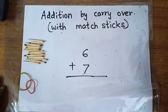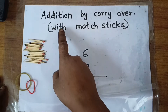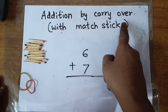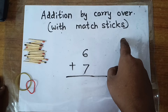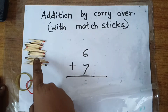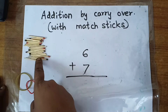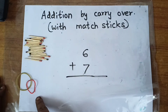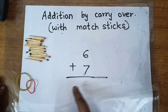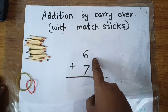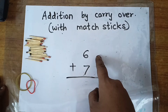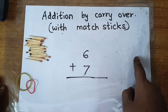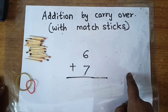Hello children, today I will teach you addition by carryover with match sticks. So I have taken some loose sticks and some rubber bands. The sum is 6 plus 7. So I will take 6 sticks, then 7 sticks.